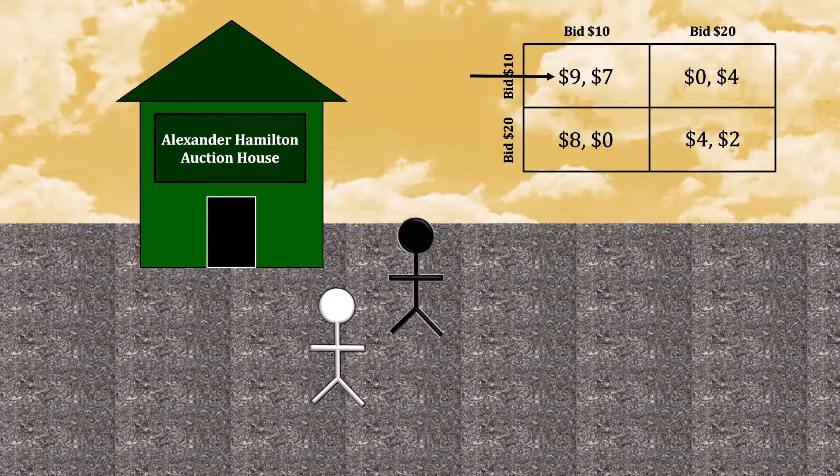Your opponent can work through a similar thought process. If they expect you to bid $10, they should also bid $10. That's because the $7 that they expect to win under those circumstances is better than bidding $20, guaranteeing the victory, but only getting $4 in net profit.